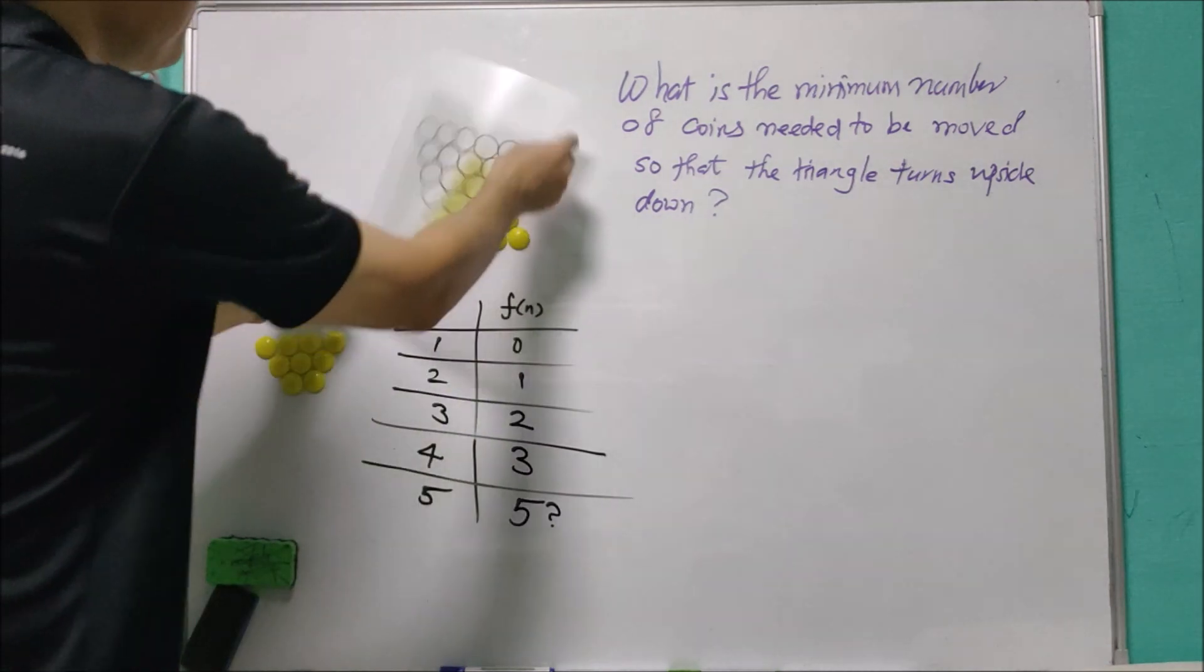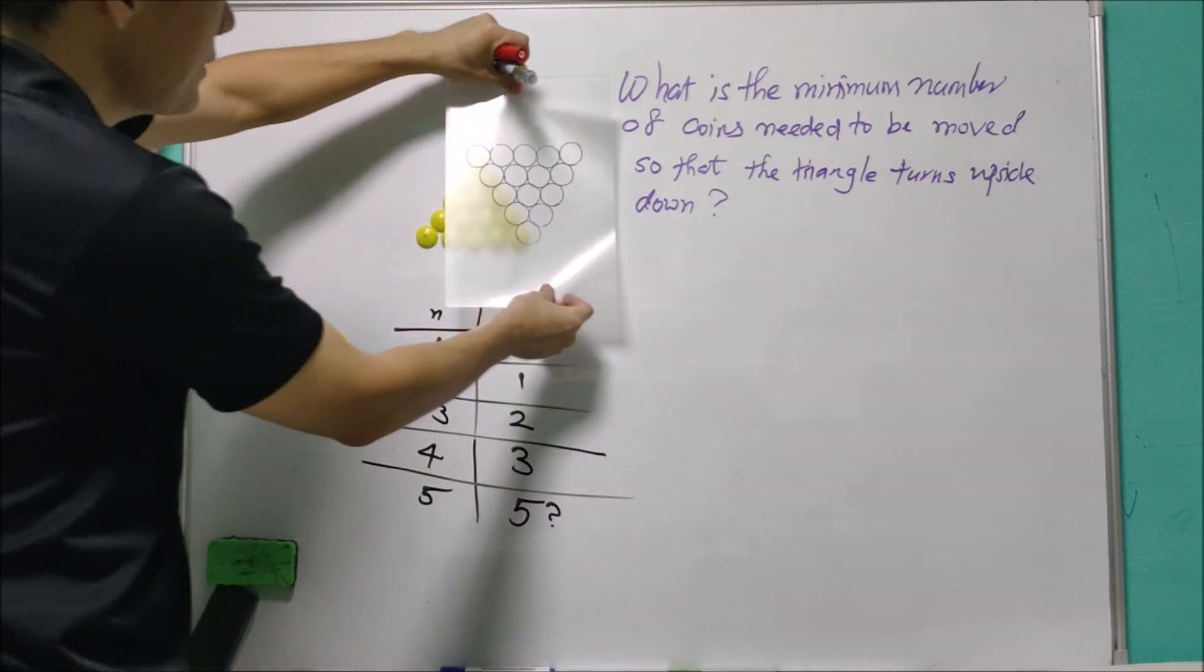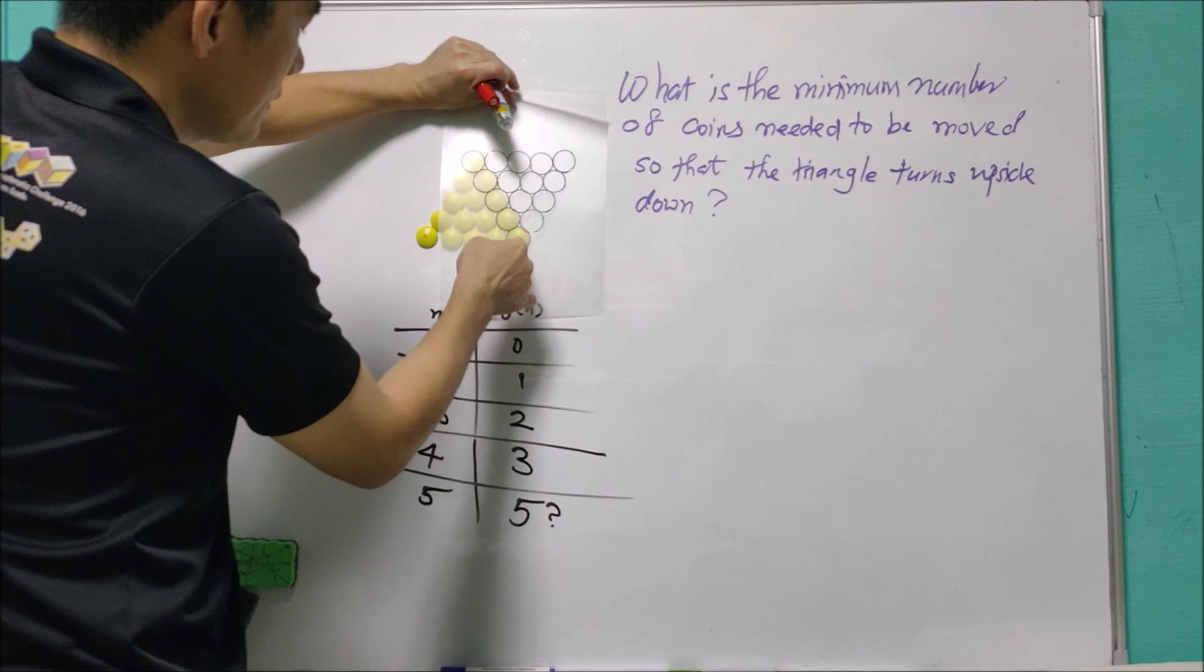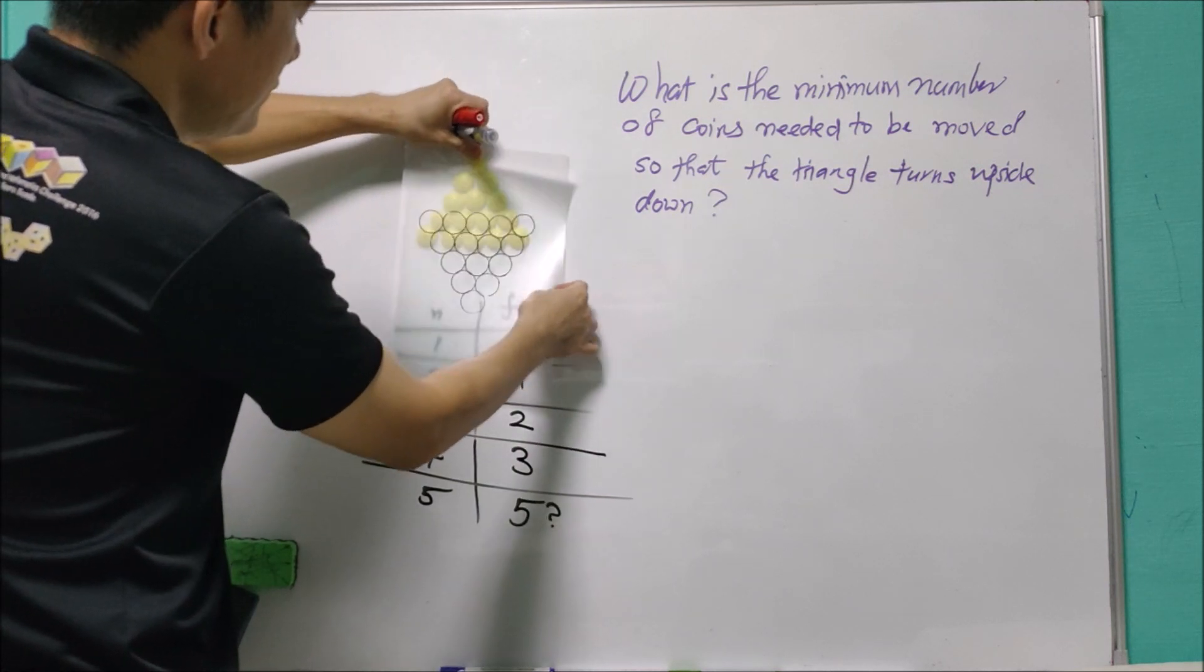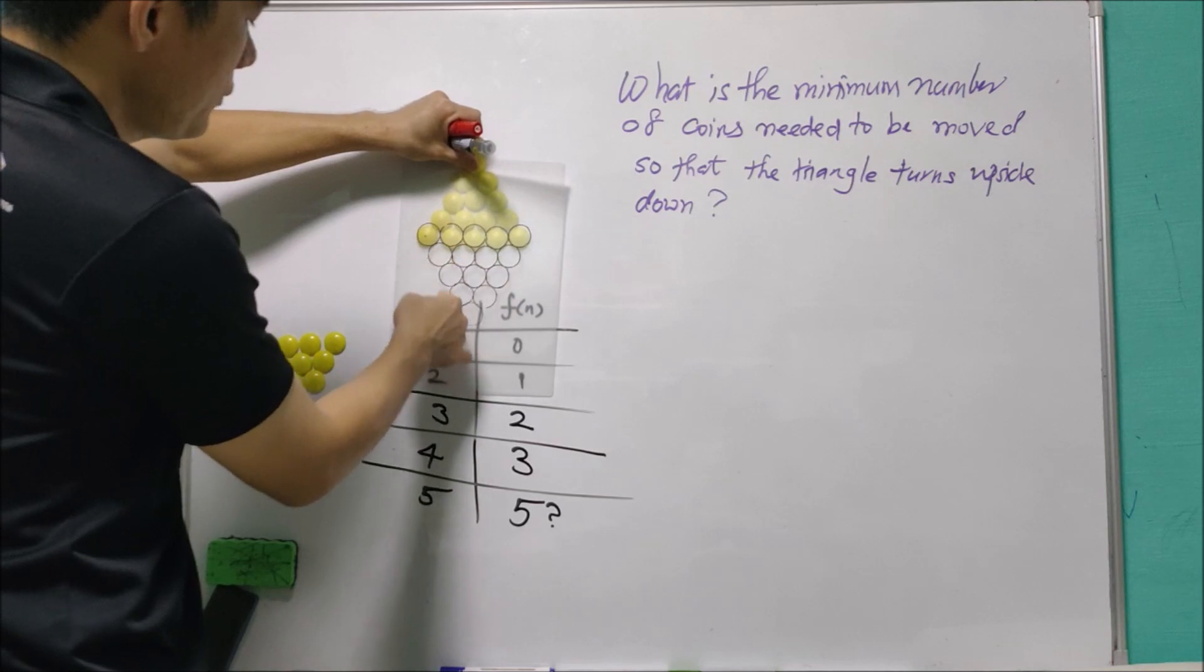For this simple case we can show it case by case. Originally we have this triangle and we want to make it upside down like this. We will move one by one. Let's say if this side of triangle is fixed, then it is similar to saying that this row is fixed, and in that case we need to move...